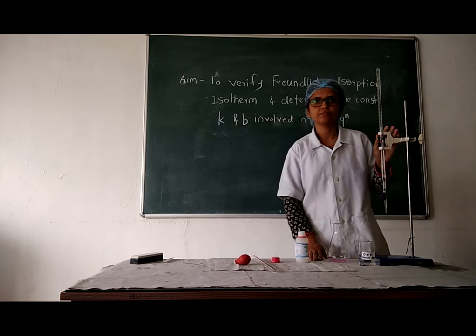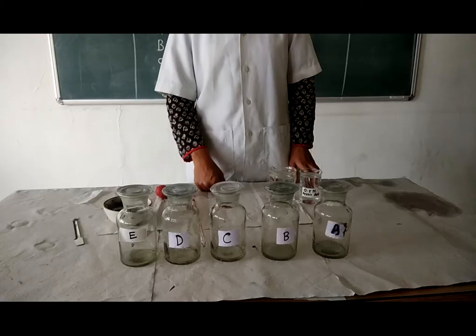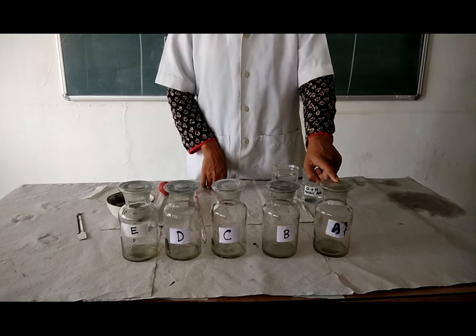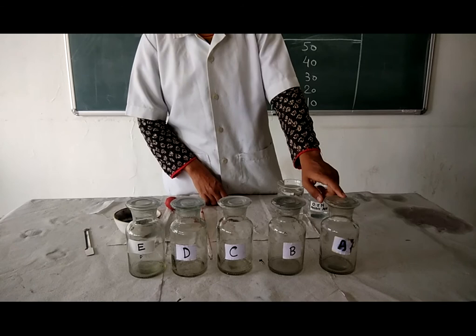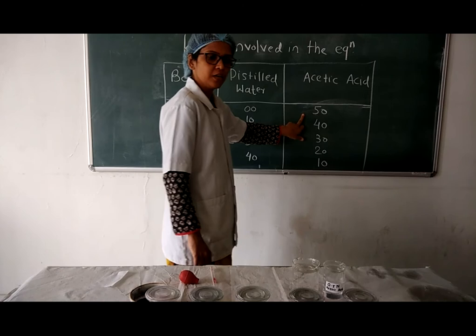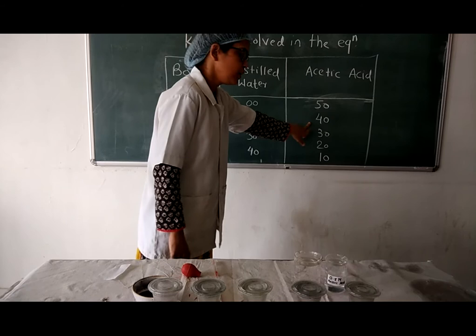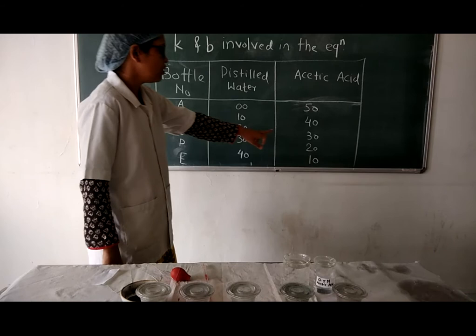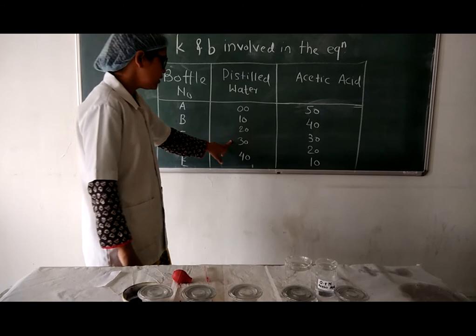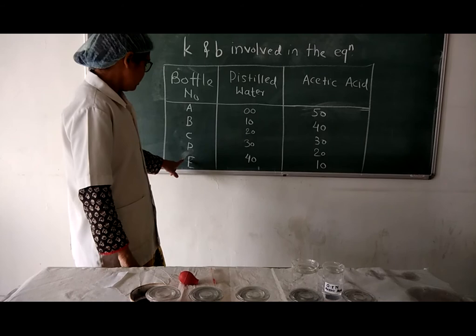Here I have taken 5 reagent bottles labeled A, B, C, D, and E. In reagent bottle A, I am adding 0 ml distilled water and 50 ml acetic acid. In bottle B, 10 ml distilled water and 40 ml acetic acid. In bottle C, 20 ml distilled water and 30 ml acetic acid. In bottle D, 30 ml distilled water and 20 ml acetic acid. In bottle E, 40 ml distilled water and 10 ml acetic acid.